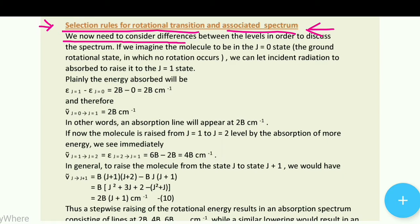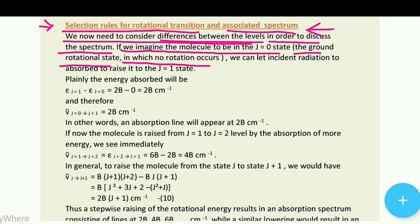We now need to consider differences between the energy levels in order to discuss the spectrum — how do we get a graph, how do we get a spectrum, how do we get a band? To discuss the energy levels and their differences, if we imagine the molecule to be in the J=0 state, the ground rotational state in which no rotation occurs, we can let incident radiation be absorbed to raise it to the J=1 state.